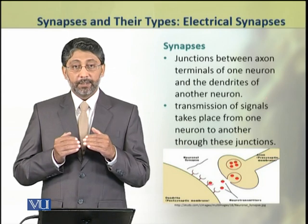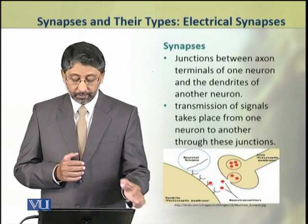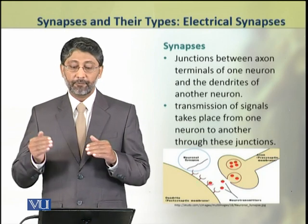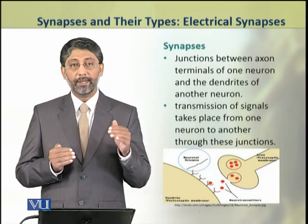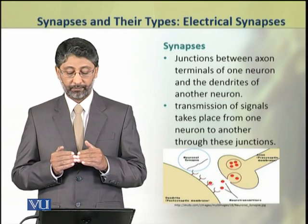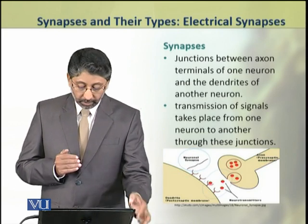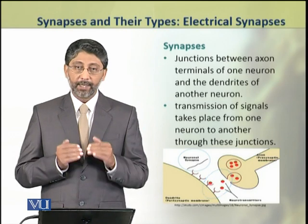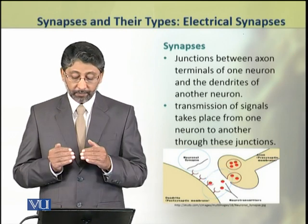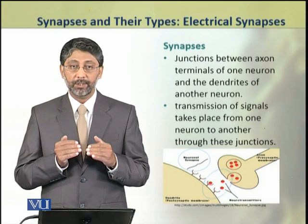Synapses are the junctions between axon terminals of one neuron and the dendrites of another neuron. The transmission of signals takes place from one neuron to the other through these junctions.